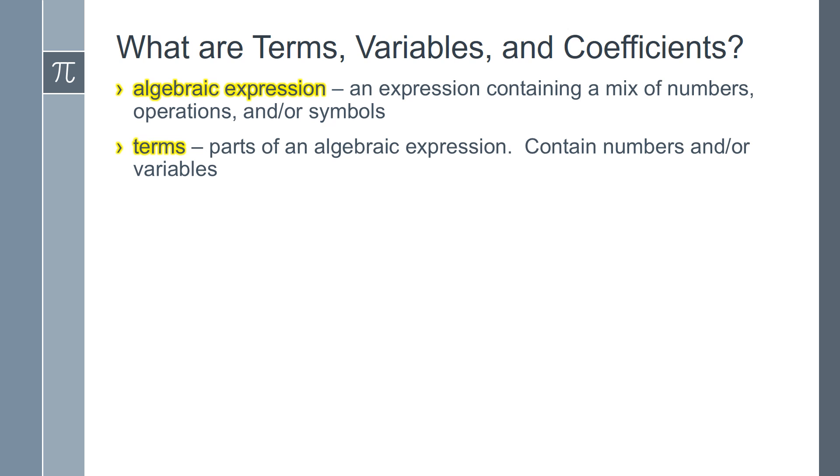Next are terms. Terms are parts of an algebraic expression. Terms contain numbers and or variables. Variables are symbols, typically letters, used to represent a number or numbers.